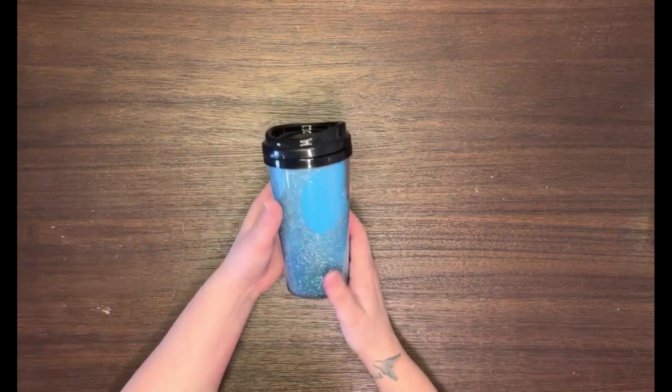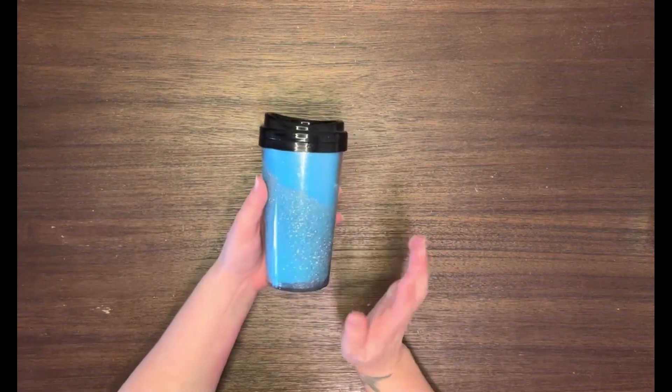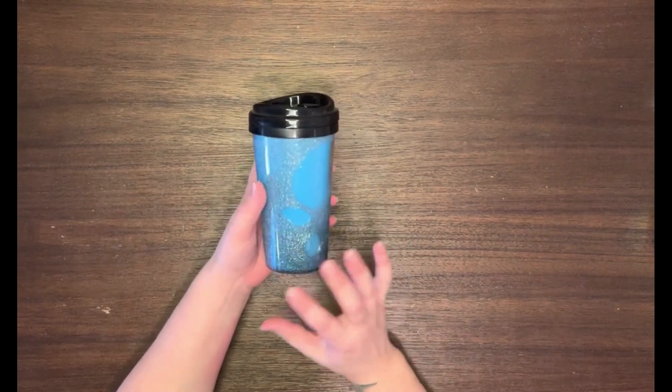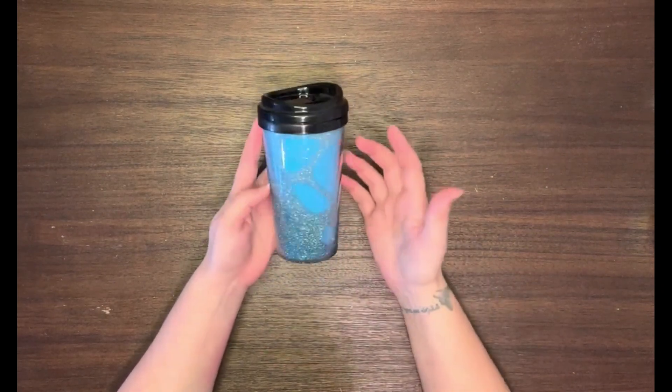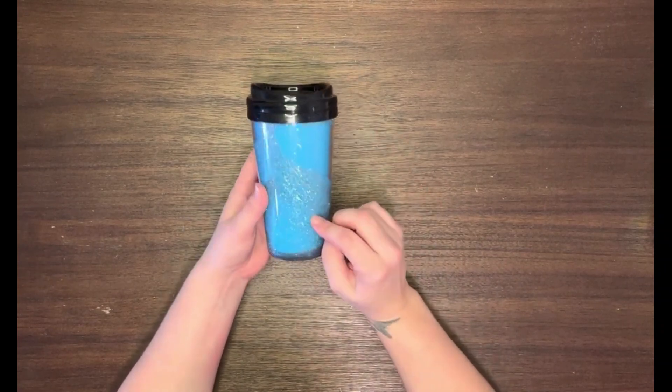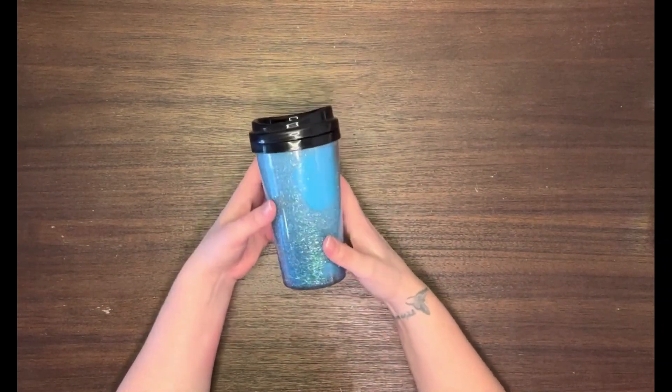Hey everybody, welcome back for another sublimation tutorial. Today we're going to take a little break from sublimation and give you something a little bit different. It's actually really simple: making a snow globe tumbler from the Dollar Tree.